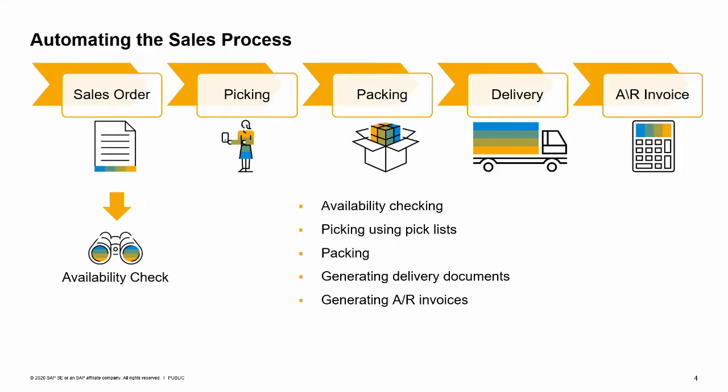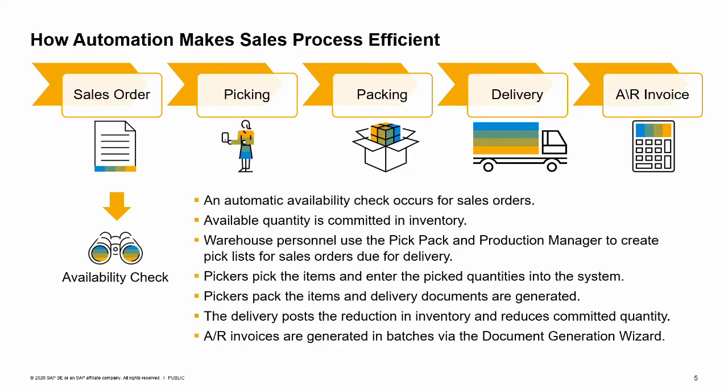We will look at five places in the sales process where sales automation adds efficiency: availability checking, picking using pick lists, packing, and generating delivery documents and AR invoices using the document generation wizard.